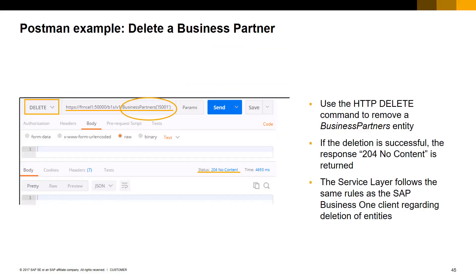Now let's have a look at the DELETE command to delete an existing business partners entity. To delete an existing business partners entity, we use the DELETE HTTP command on the service layer root path plus BusinessPartners and the parameter specifying the specific CardCode of the business partner to be deleted. We do not require any body information in the request because we are providing the key information in the URL directly. If the business partners entity exists in our company database and the deletion is possible, the response status will be 204 No Content with no body content returned. Please note the service layer follows the same rules as the SAP Business One client regarding the deletion of entities. Therefore, it is not possible to delete a business partners entity that already has some documents assigned.